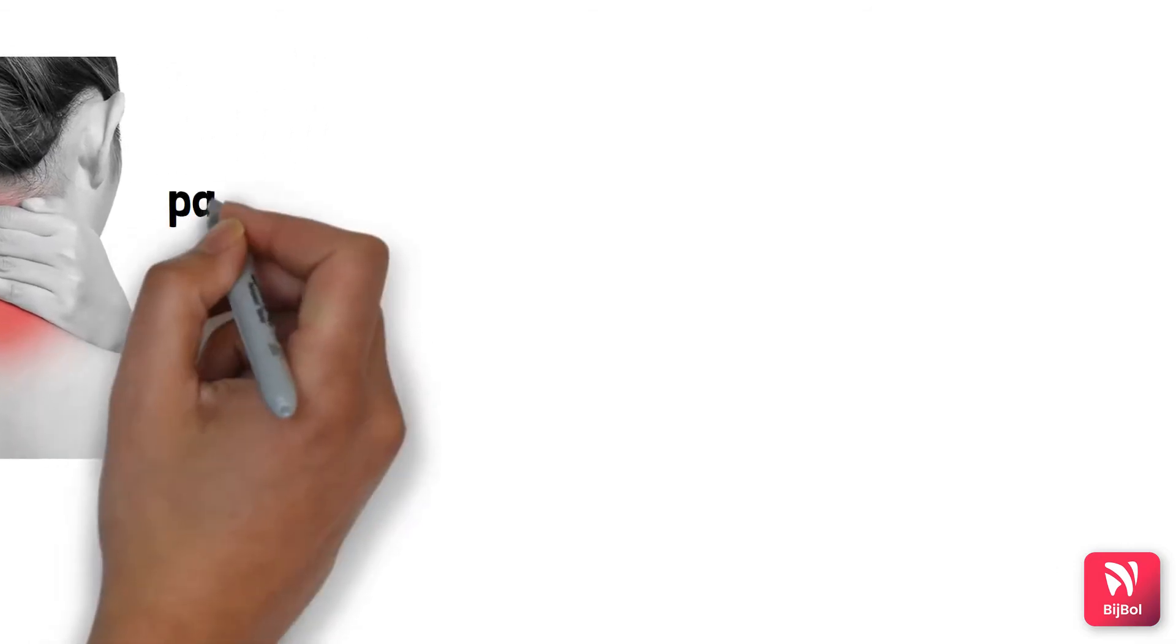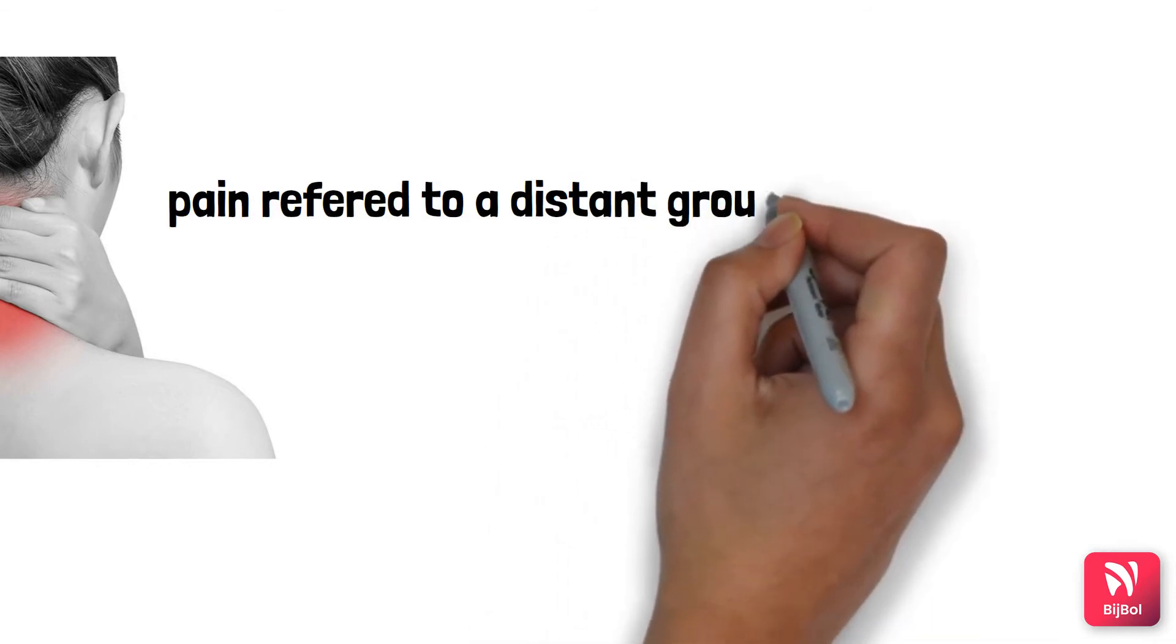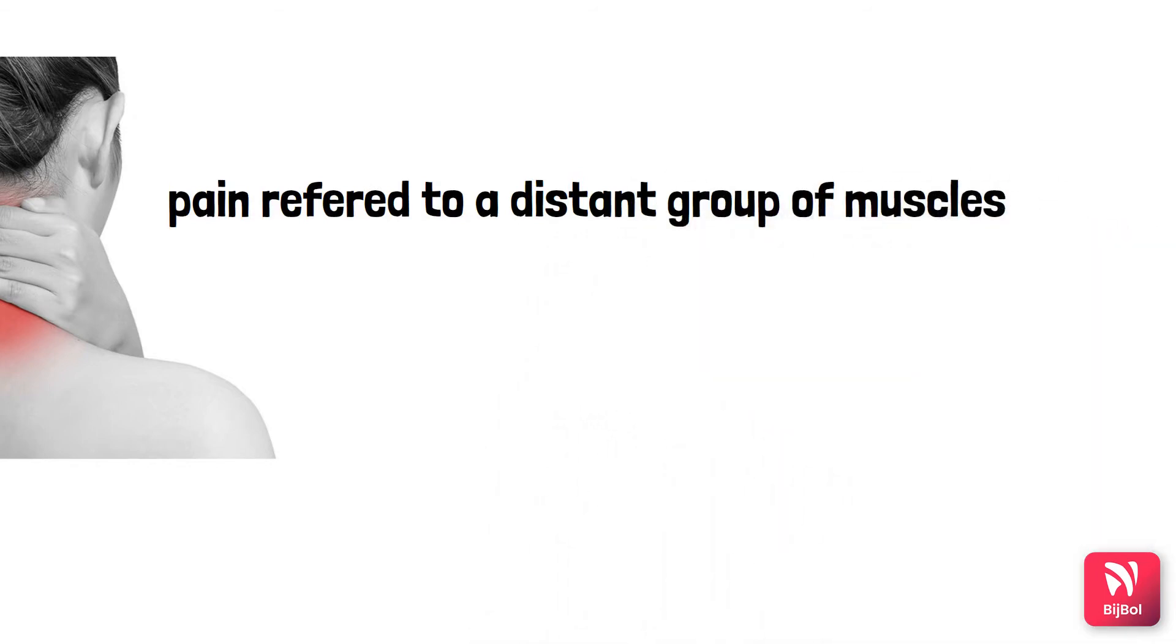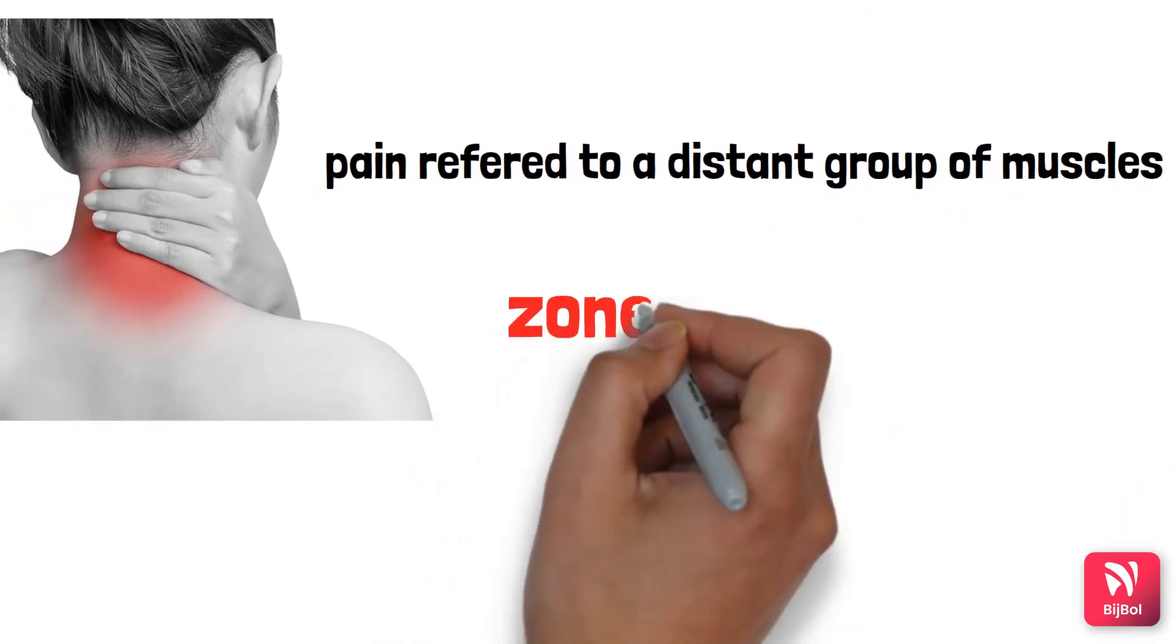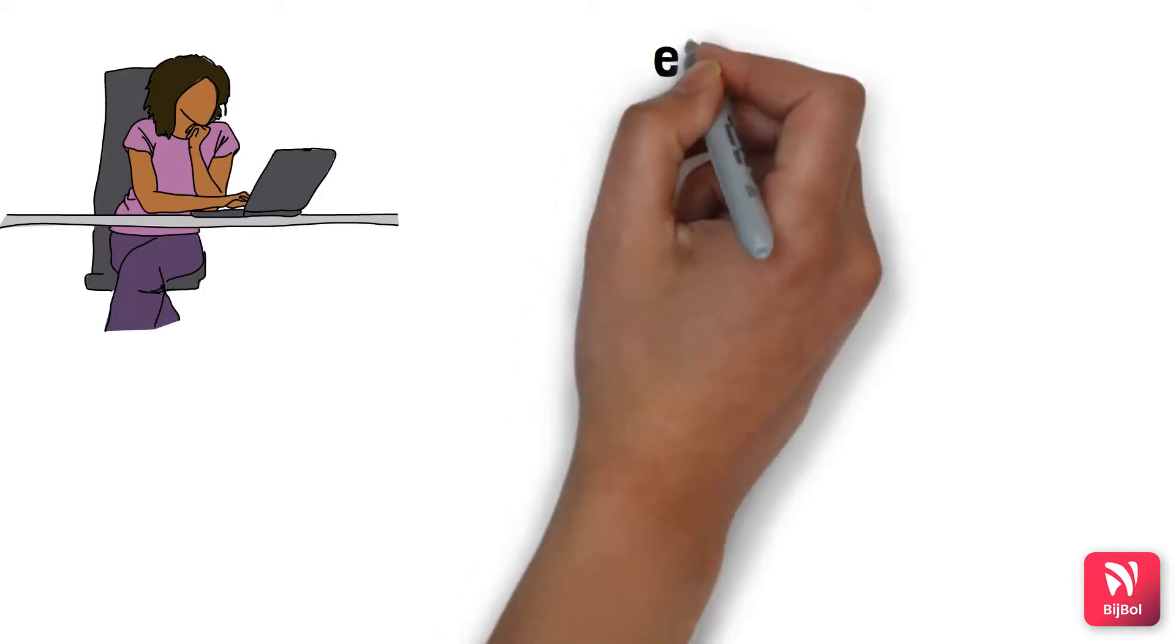The characteristic feature of MPDS is the presence of trigger zones and zones of reference. Now let's look into what causes MPDS. There are three main reasons: firstly, central or psychogenic